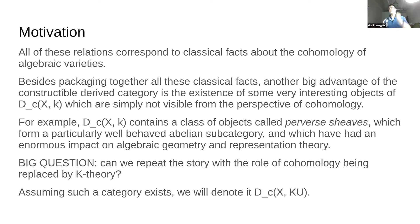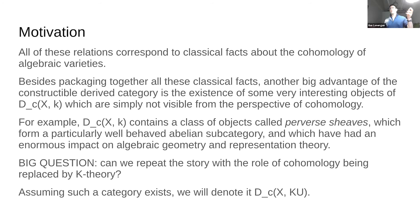I'm introducing new notation for this category. Before we had DC(X, K) where K was our ring — the integers or the rationals or something like that. Let's just replace it by the symbol KU and let that denote this imagined amazing category. The next thing I want to do is actually give a concrete example of a great theorem from representation theory — from geometric representation theory — that was proved about one example of a constructible derived category, and say what we would hope the theorem about this other object would say.